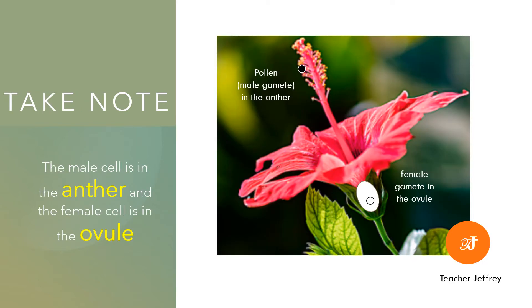Before we start the lesson, we need to take note where the gametes are. The male gamete is in the anther and the female gamete is in the ovule. The goal is for the gametes to meet. Let's go!